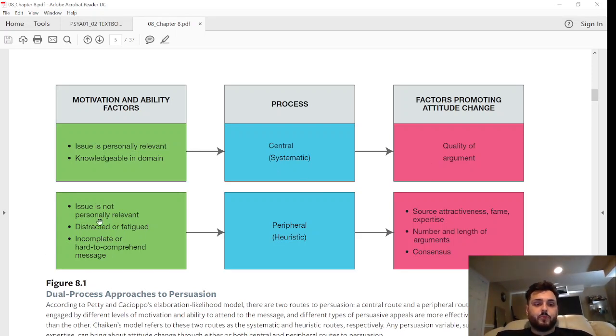Whereas if we look at the peripheral one, if you break down 'peripheral,' it's in the back, it's not top of mind, it's not at the front. The issue is not personally relevant, as opposed to the central one. You get distracted or fatigued when hearing about it. It's incomplete, it's hard to comprehend, it's not very clear. That's why it's not at the top of your mind. The way we would get someone to be persuaded by this would be through the attractiveness, the fame, or the expertise on this issue, the number and length of the arguments, and basically what's the general consensus—what's everybody saying around us. As you can see, the central version versus the peripheral are very different and they can be broken down very differently as well.